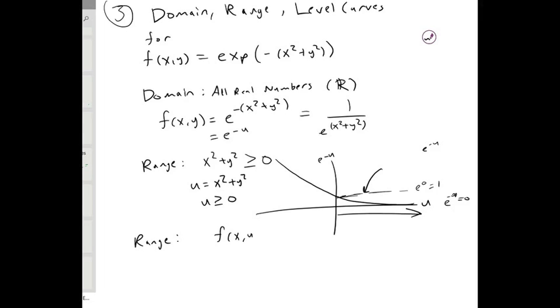So the range is f of x,y, it's between 0 and 1, or you can write it as this. And we should probably put equals, because this doesn't actually ever equal 0, it only approaches it.